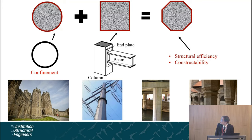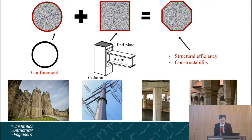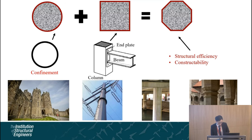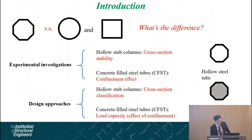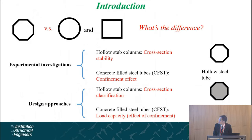So we want to find a new cross-section shape that has both advantages — good structural efficiency and also good constructability. We found this octagonal section, and we focus on what the differences are between the octagonal section and traditional cross-section shapes.